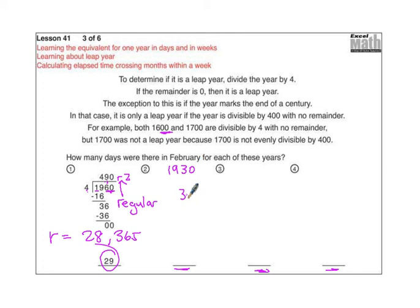So you should do 30 divided by four. Four times seven is 28. Subtract and get two. So we have a remainder. Remember, R, remainder, means regular. This is a regular year and so there are 28 days in February of that year.